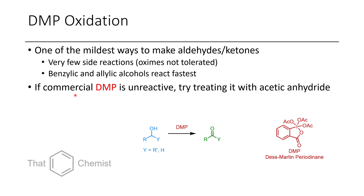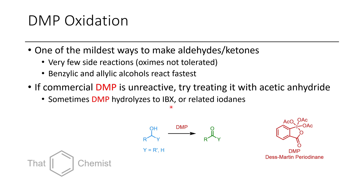However, one reason some people don't like using DMP is that sometimes the commercially obtained material is somewhat unreactive or doesn't dissolve in dichloromethane as expected. This is because sometimes during production or handling it has been partially hydrolyzed — it can decompose to IBX, which is actually one of the intermediates used to make Dess–Martin periodinane. Sometimes if you just recrystallize it with a bit of acetic anhydride, you can convert any partially hydrolyzed product back into DMP. You can also make it from scratch; the preparation of IBX has been well established through several different routes.